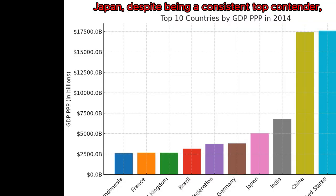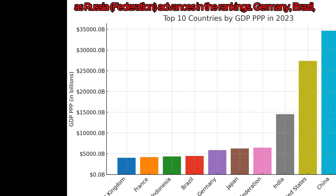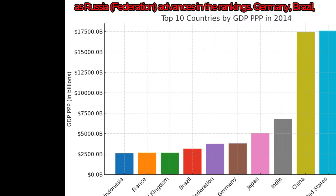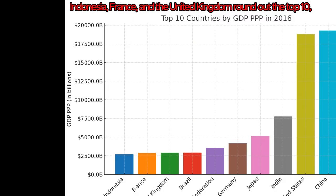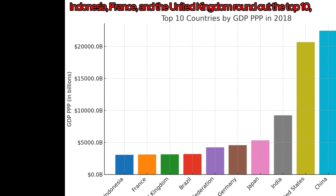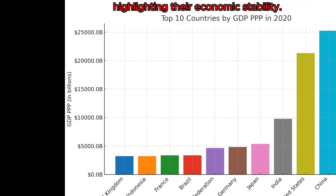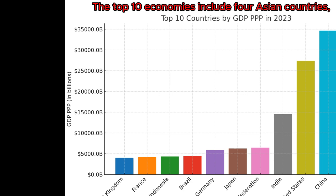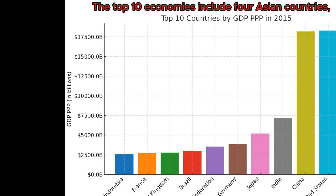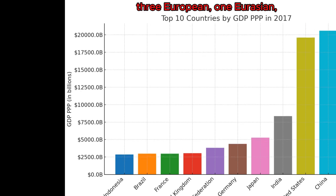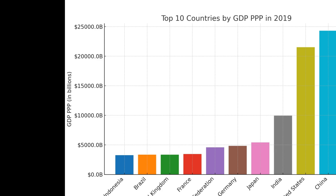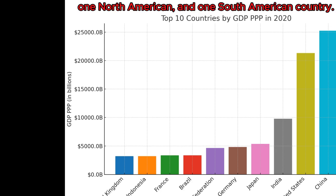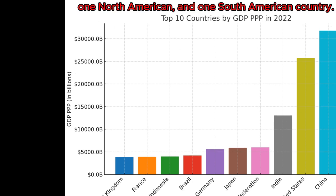Japan, despite being a consistent top contender, shifts from fourth to fifth as Russia advances in the rankings. Germany, Brazil, Indonesia, France, and the U.K. round out the top 10, highlighting their economic stability. The top 10 economies include four Asian countries, three European, one Eurasian, one North American, and one South American country.